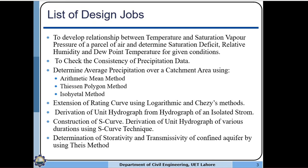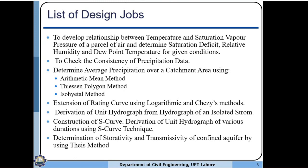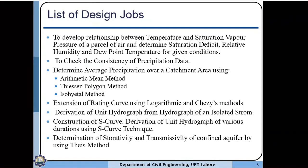The third job is to determine the average precipitation over a catchment area using the following three methods: the arithmetic mean method, the Thiessen polygon method, and the isohyetal method. You will be given precipitation or rainfall data at different gauging stations and use these methods to find the average precipitation over the entire given catchment area.